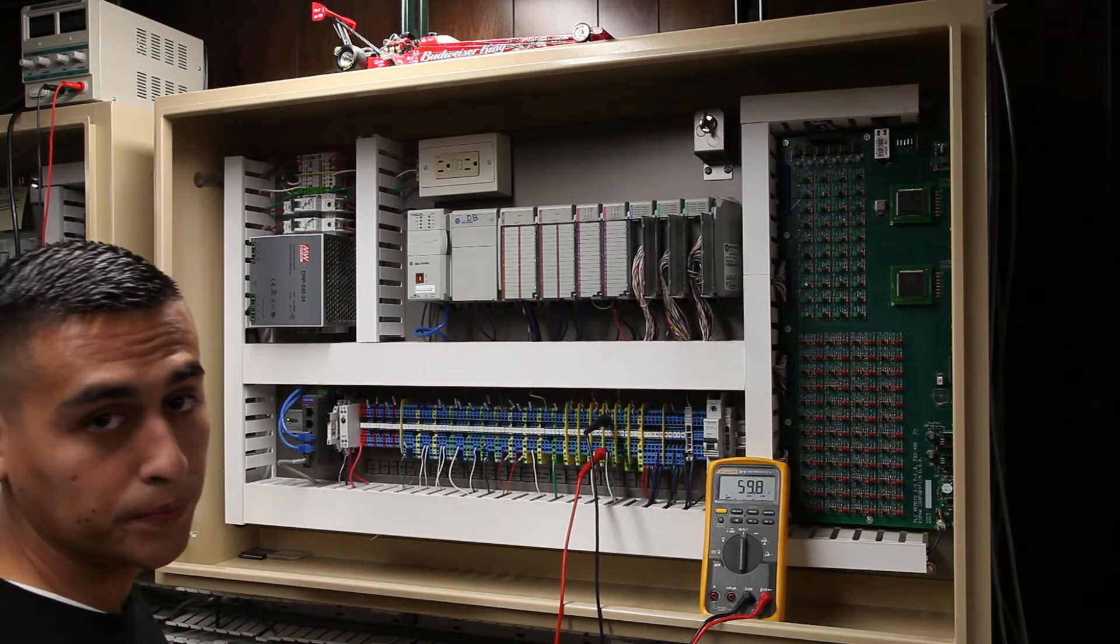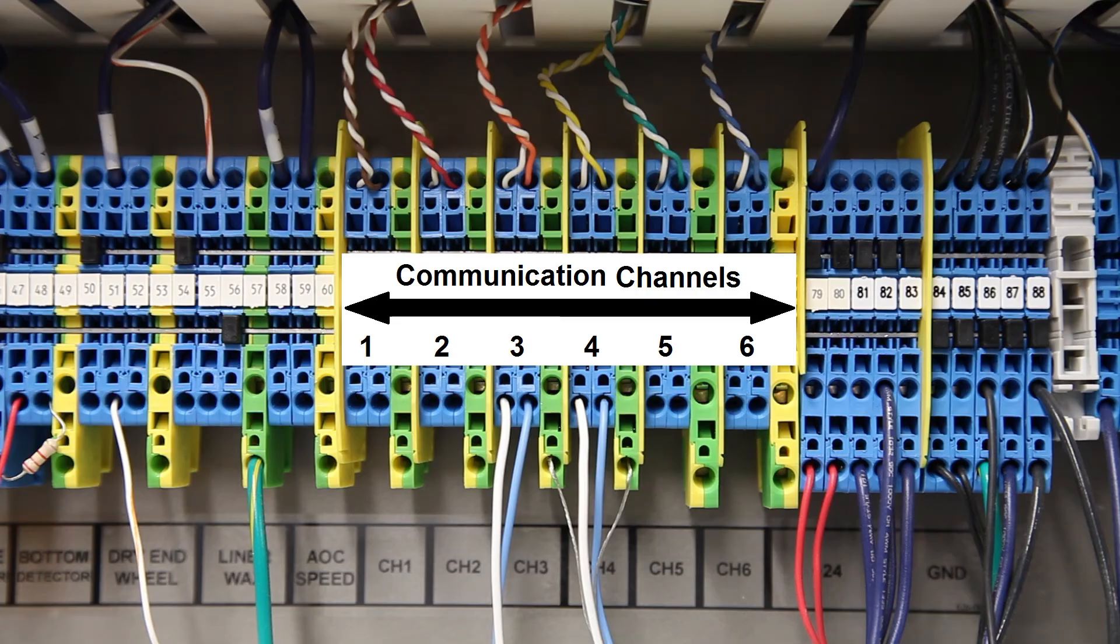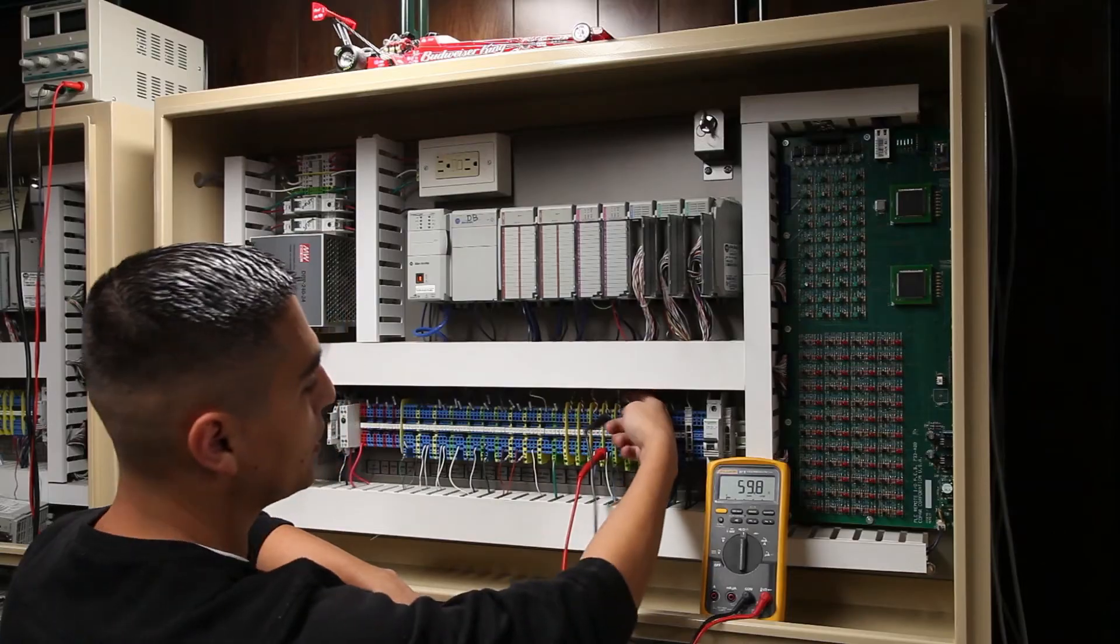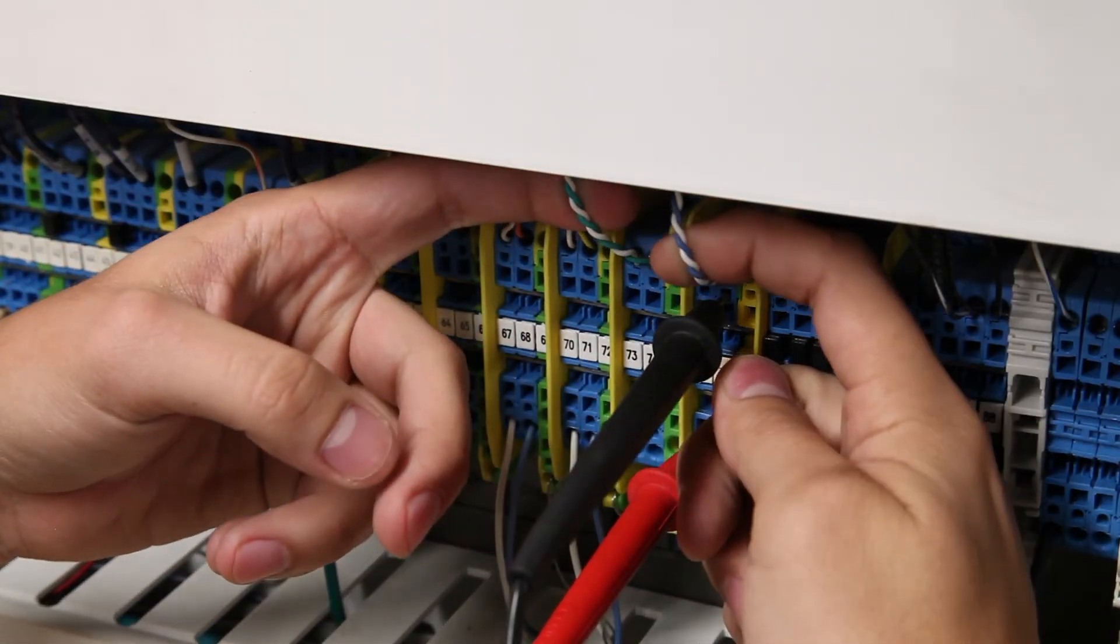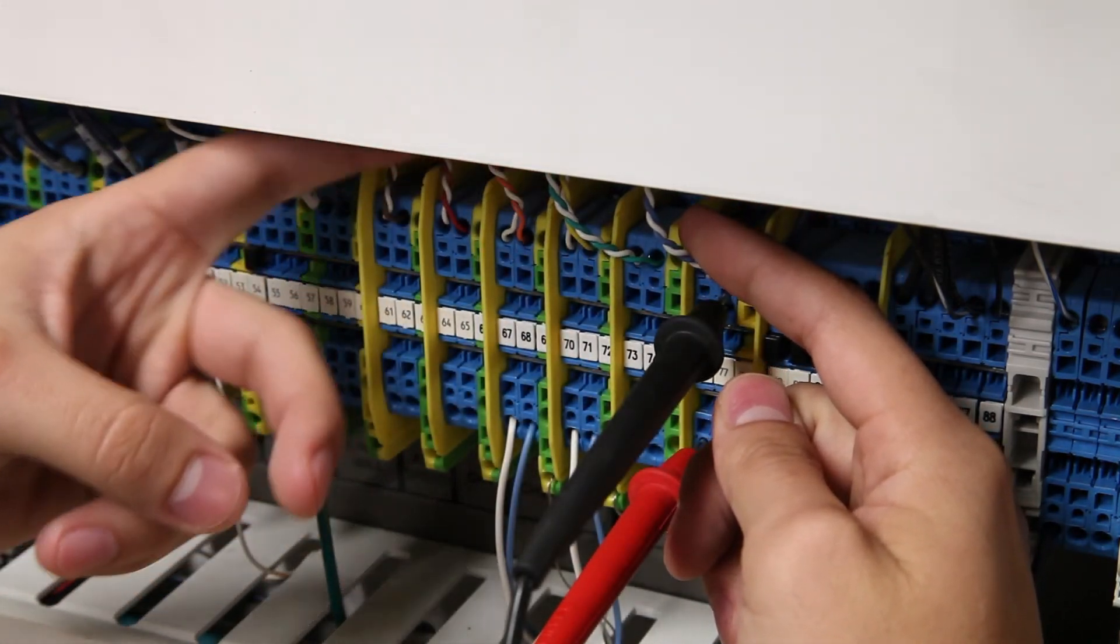The next thing you want to do is locate your D-Net channels. There should be six of them. One, two, three, four, five, six. They are going to be colored. There are two twisted pair of wires for each channel.